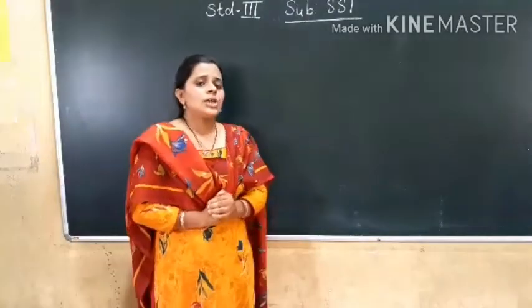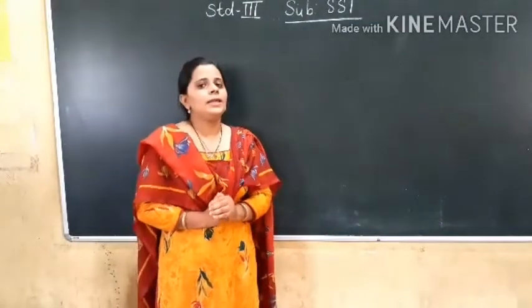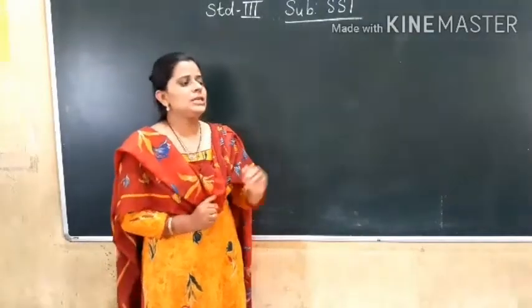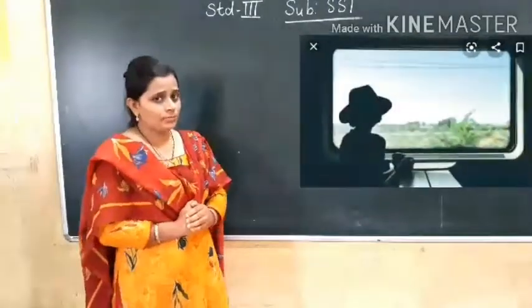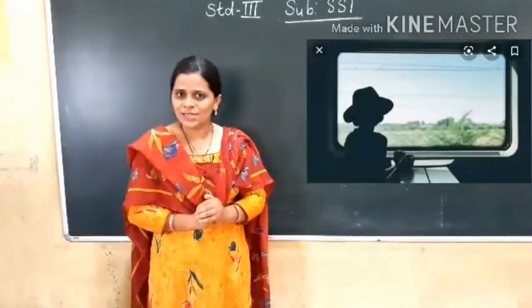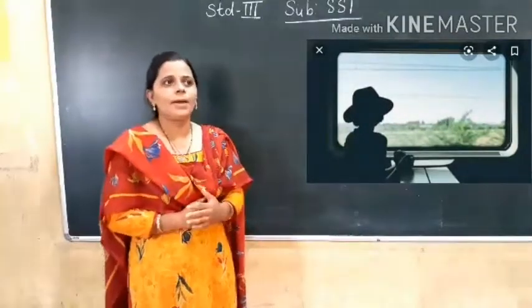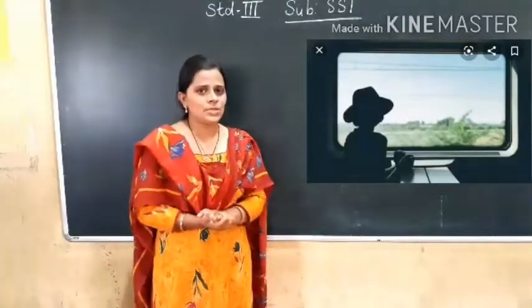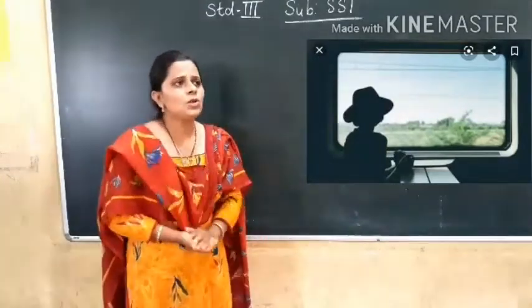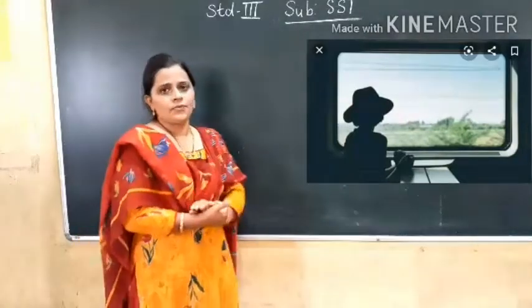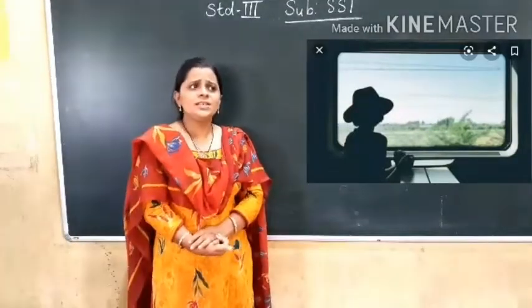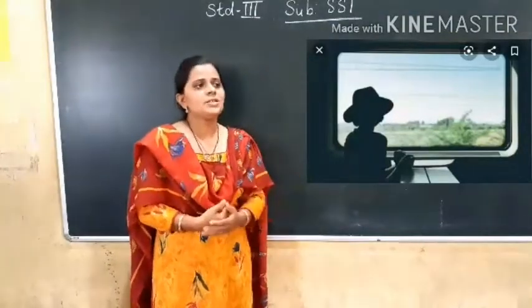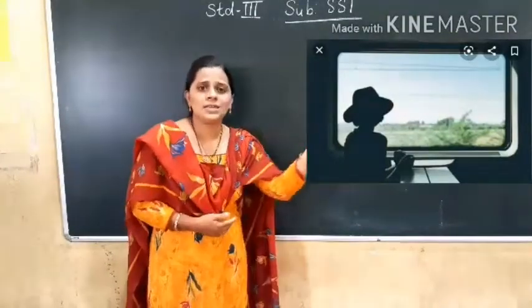She is traveling by train from Delhi to Chile. And Ruby is sitting near the window seat. You also like to sit in the window seat, right? When you are traveling by bus or by train, you like to sit near the window seat. So she is also sitting near the window seat, and she is observing the outside — watching the scenery outside.